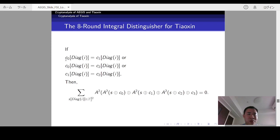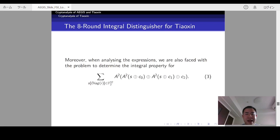However, if we add any one of the three conditions, this, this, or this, there will be a deterministic integral property for the sum. So this is why we need to use the weak keys. Then while analyzing the expressions, we're also faced with the problem to determine the integral property for this expression.